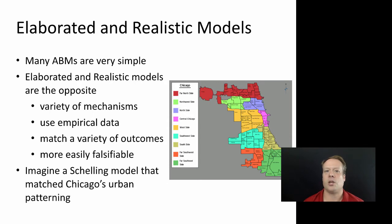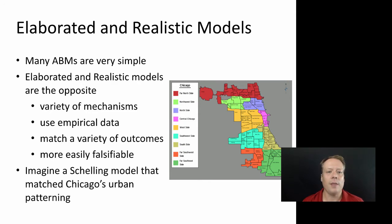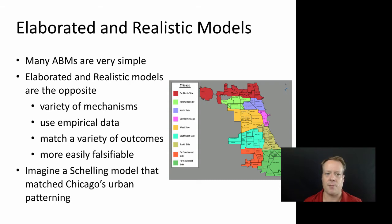Today we're going to jump to a different topic and talk about different design model guidelines and different ways to use ABM that we may not have had a chance to talk about before. Let me begin by talking about elaborated and realistic models. Many ABMs we've looked at, like the flocking, segregation, and ANTS model, are very simple models — they have simple rules that interact in interesting ways to create elaborate patterns.